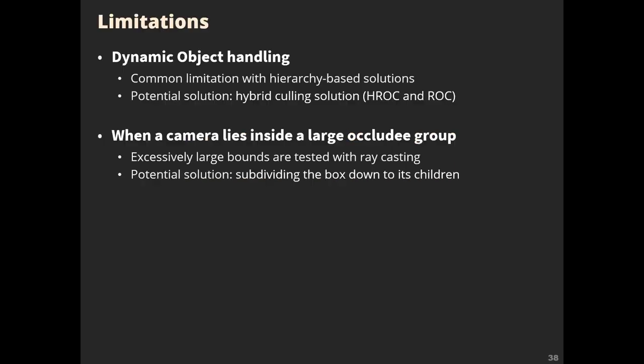Finally, let's discuss the limitations and conclusion of our work. One inherent limitation is that we assume a static hierarchy; dynamic objects require independent handling. A potential solution is a hybrid culling approach using HROC and ROC for static and dynamic objects respectively. Another performance penalty occurs when the camera lies inside the bound of a large occluded group, causing our algorithm to cast rays for the entire screen. A potential solution is adaptive grouping, which subdivides the bounding box down to its children to avoid testing against large bounds.